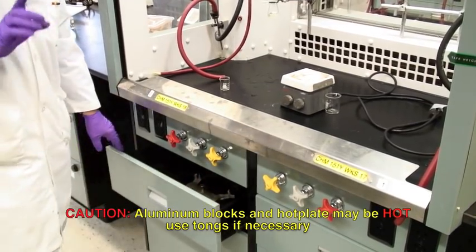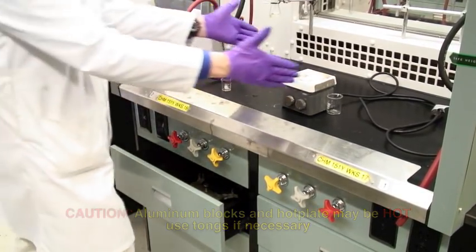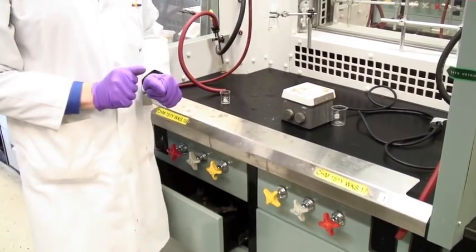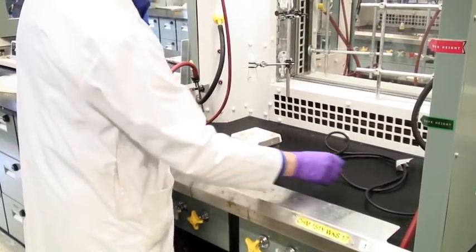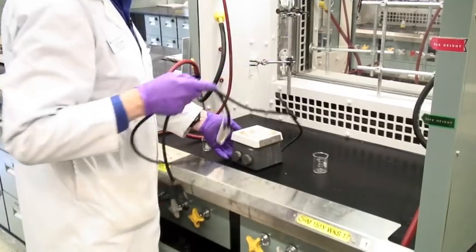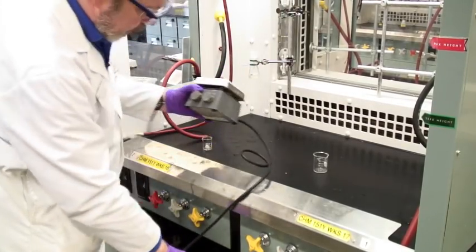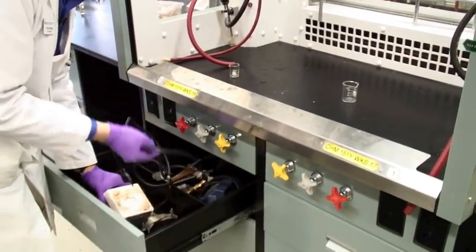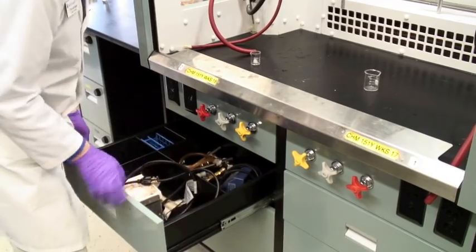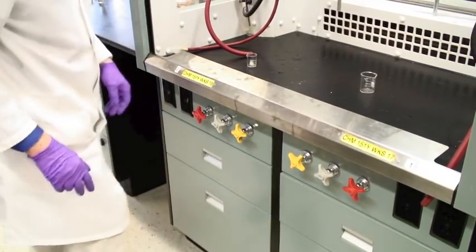Now do be careful. The aluminum may be hot, so don't just grab it with your hands. You may end up burning things like gloves and fingers. The hot plate itself needs to be unplugged and returned to the drawer underneath and close those up.